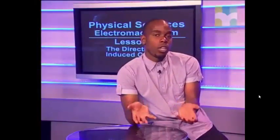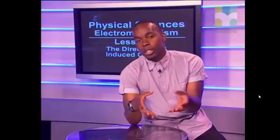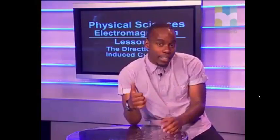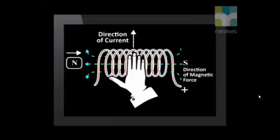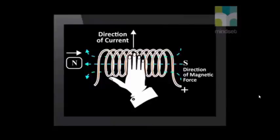The current is in a solenoid, so to confirm the direction of the current, we use the right-hand solenoid rule again. When a north pole is pushed into the solenoid, a north pole forms on the left-hand side of the coil as shown in the diagram. According to the right-hand rule, the thumb points to the north and the curled fingers show the direction of the current. When we look from the side of the approaching magnet, this is in an anti-clockwise direction.